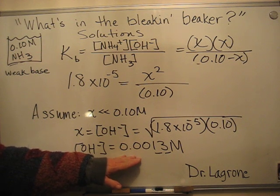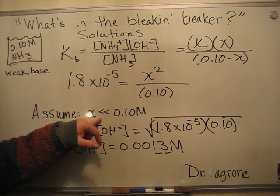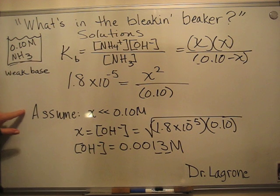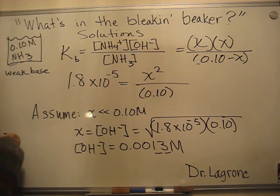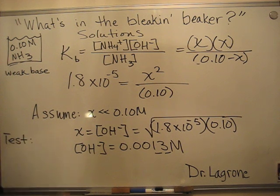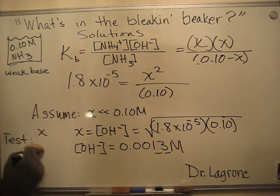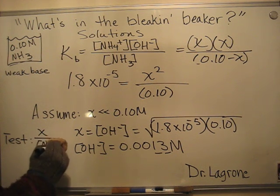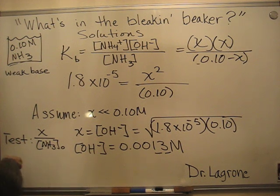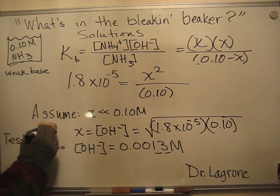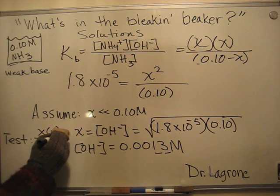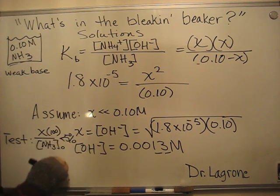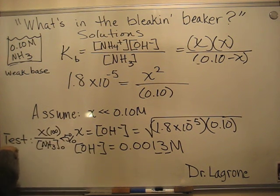That's what we get if we make this assumption. Now let's check. Every time you assume this, you have to run your test. It's called the five percent rule test. We basically take what we get for X divided by the initial concentration. In this case, it's ammonia. The little zero here means initial concentration. We see if that is less than five percent.